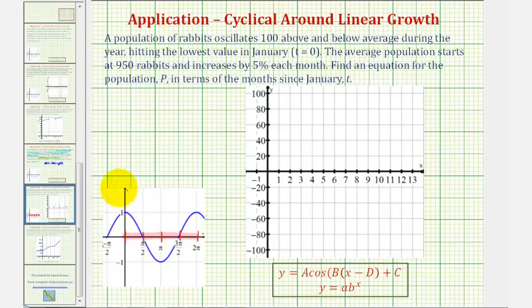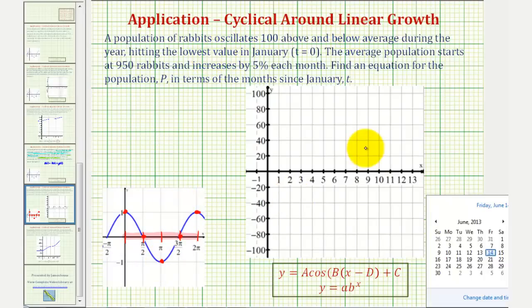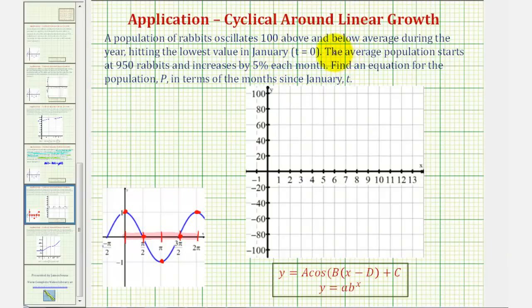Notice it starts at a maximum value, then it's at the midline, then a minimum, then the midline, and then a maximum. So we can use this pattern to graph the oscillation part of our growth function and then find the equation for the oscillation part.